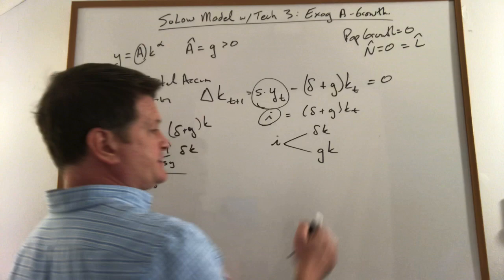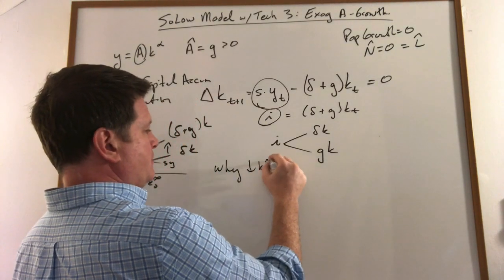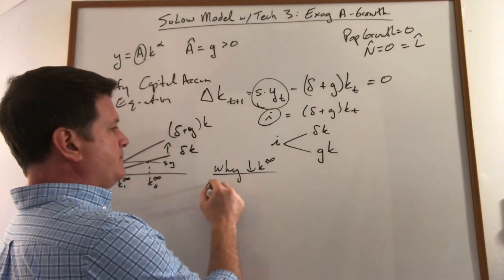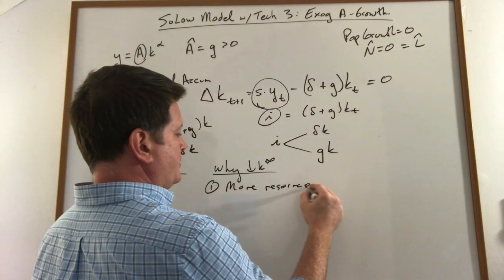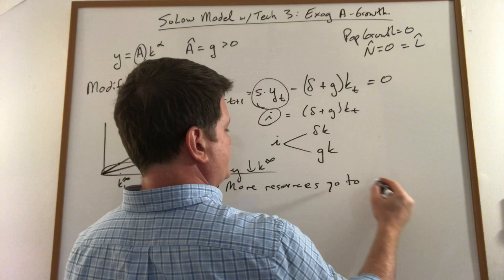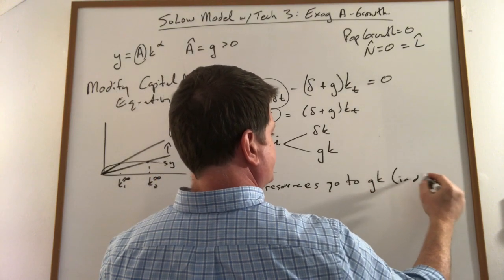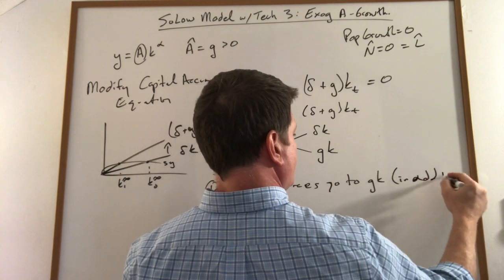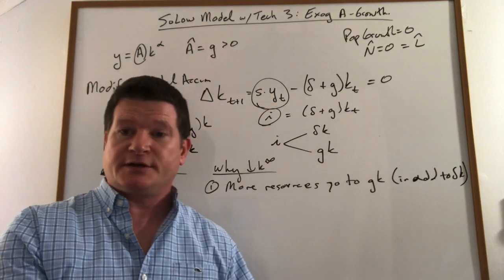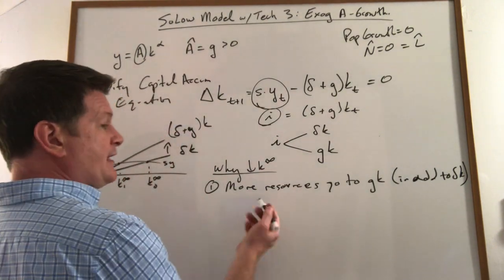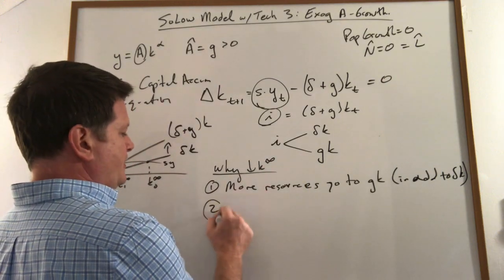Why is that? There are really two reasons. One of them is why we lower the steady state capital stock. One is this: more resources go to GK in addition to delta K. So we have to add extra resources from production that go back into that. That leaves less resources to go just back into extra production itself.